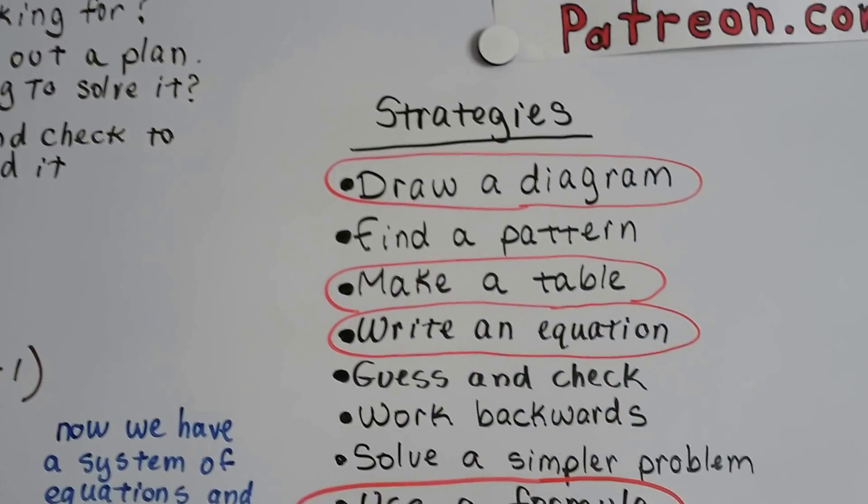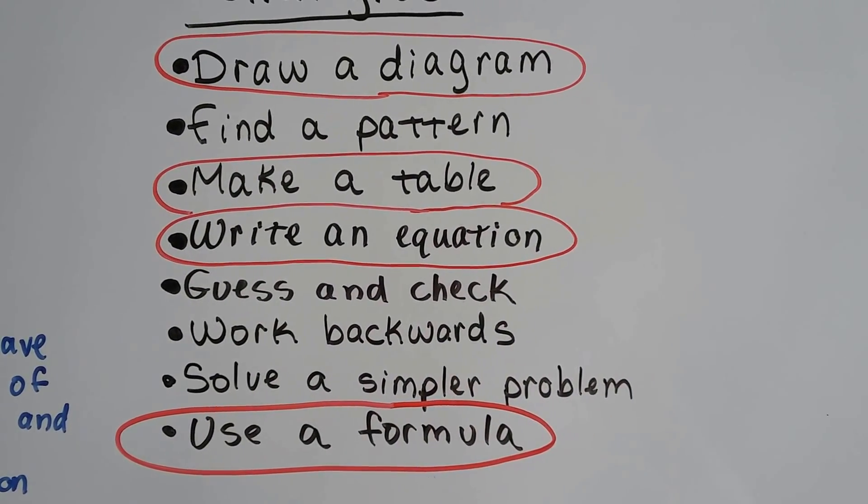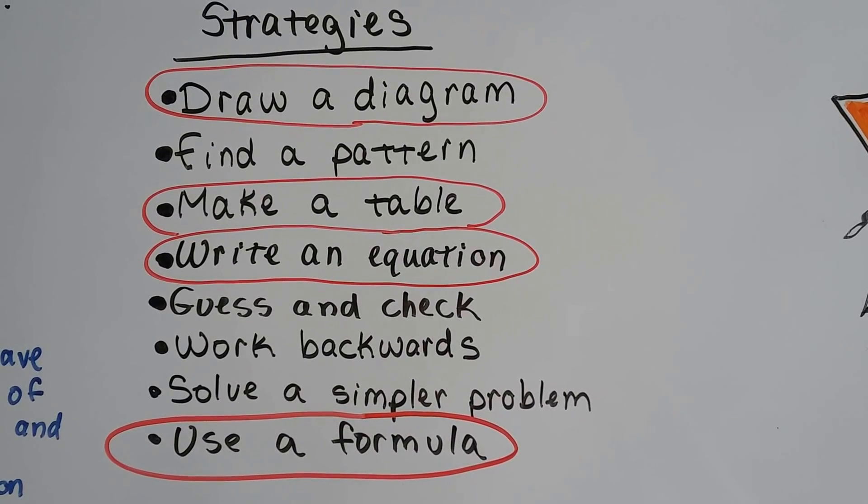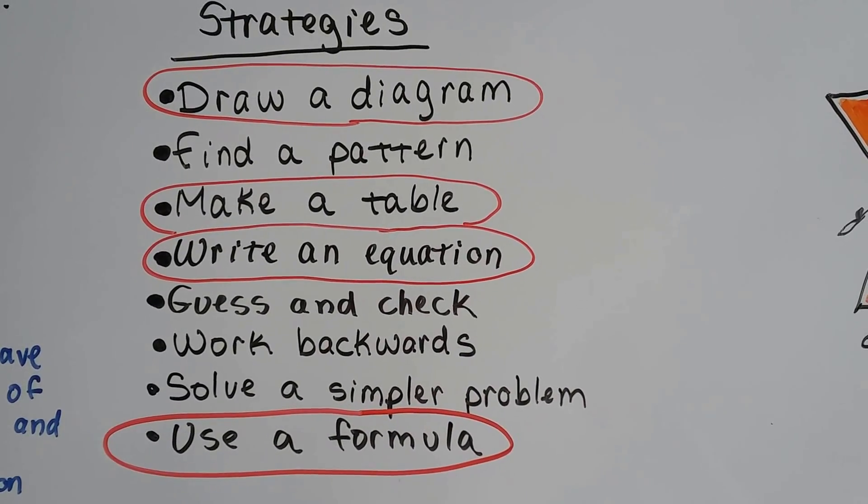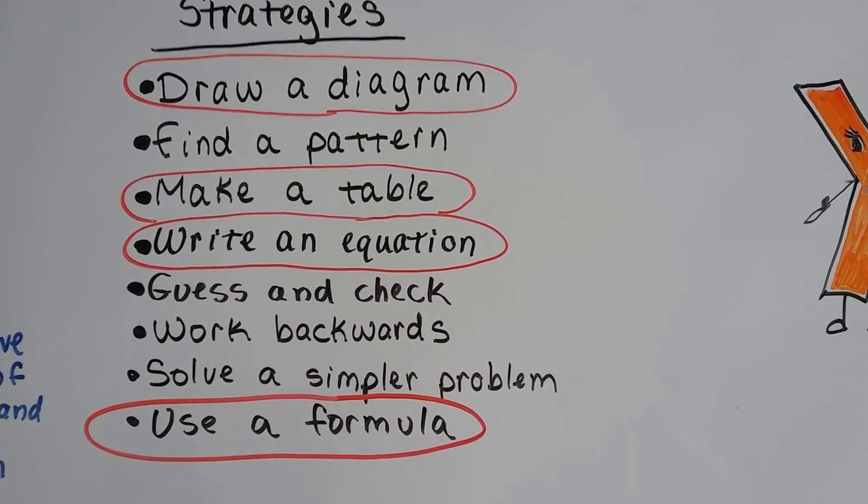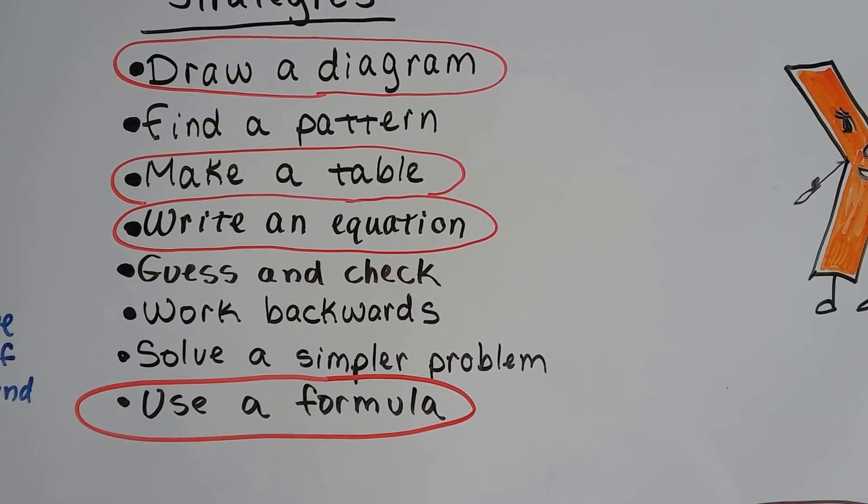For word problems, we've got our strategies. We can draw a diagram, find a pattern, make a table, write an equation. We can even guess and check or work backwards, solve a simpler problem, or use a formula. In this word problem, we're going to do four things: draw a diagram, make a table, write an equation, and use a formula.